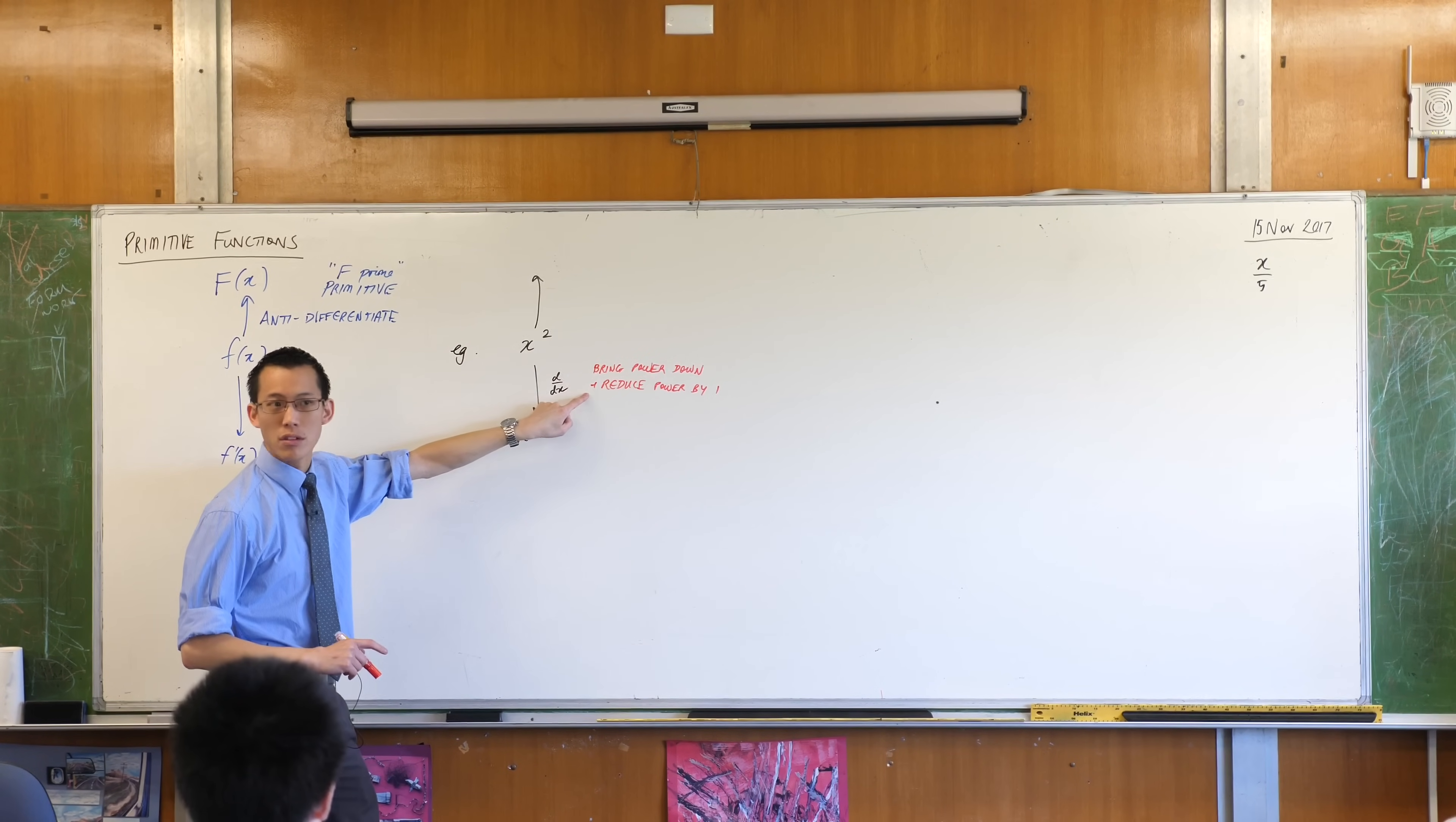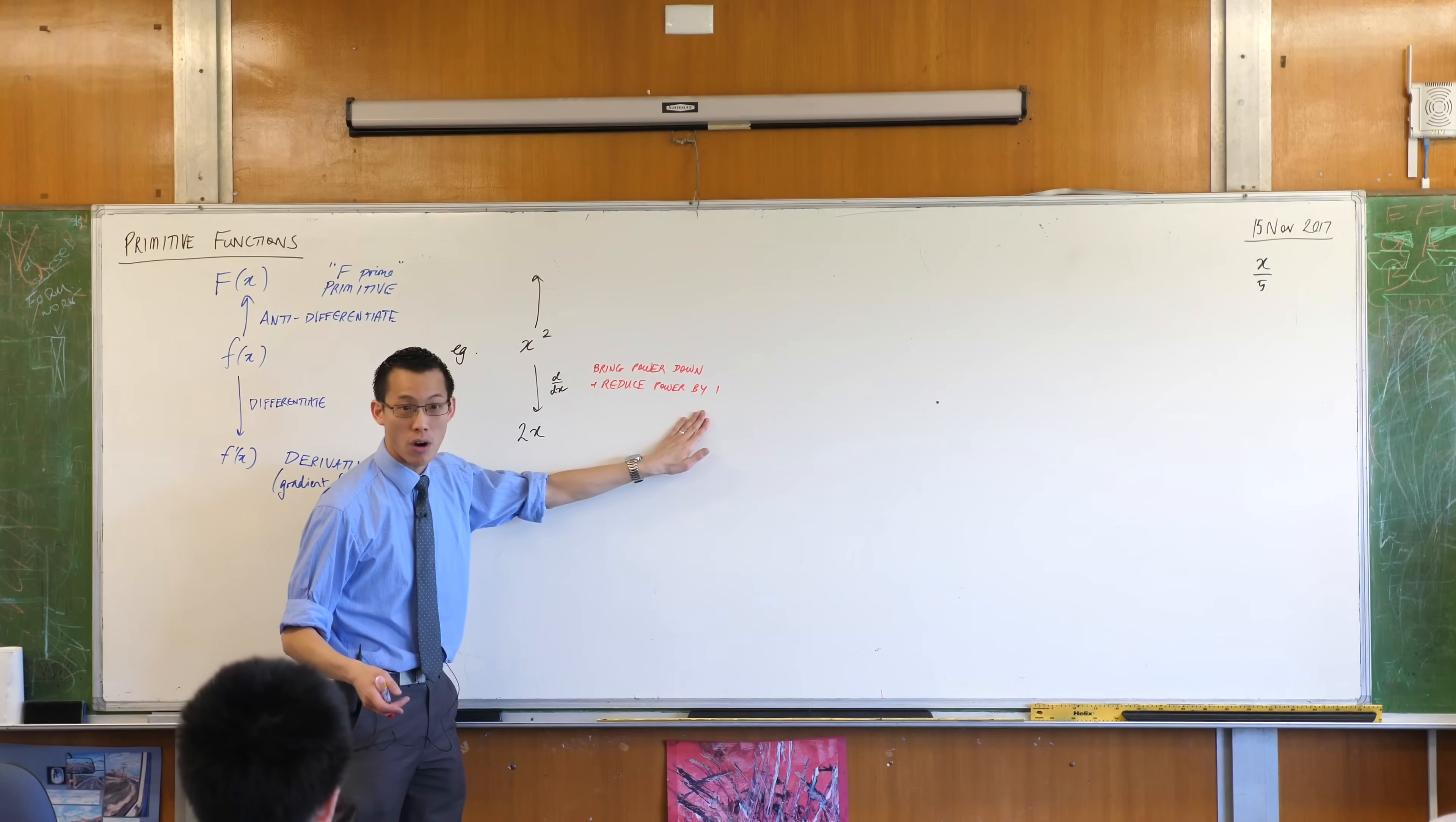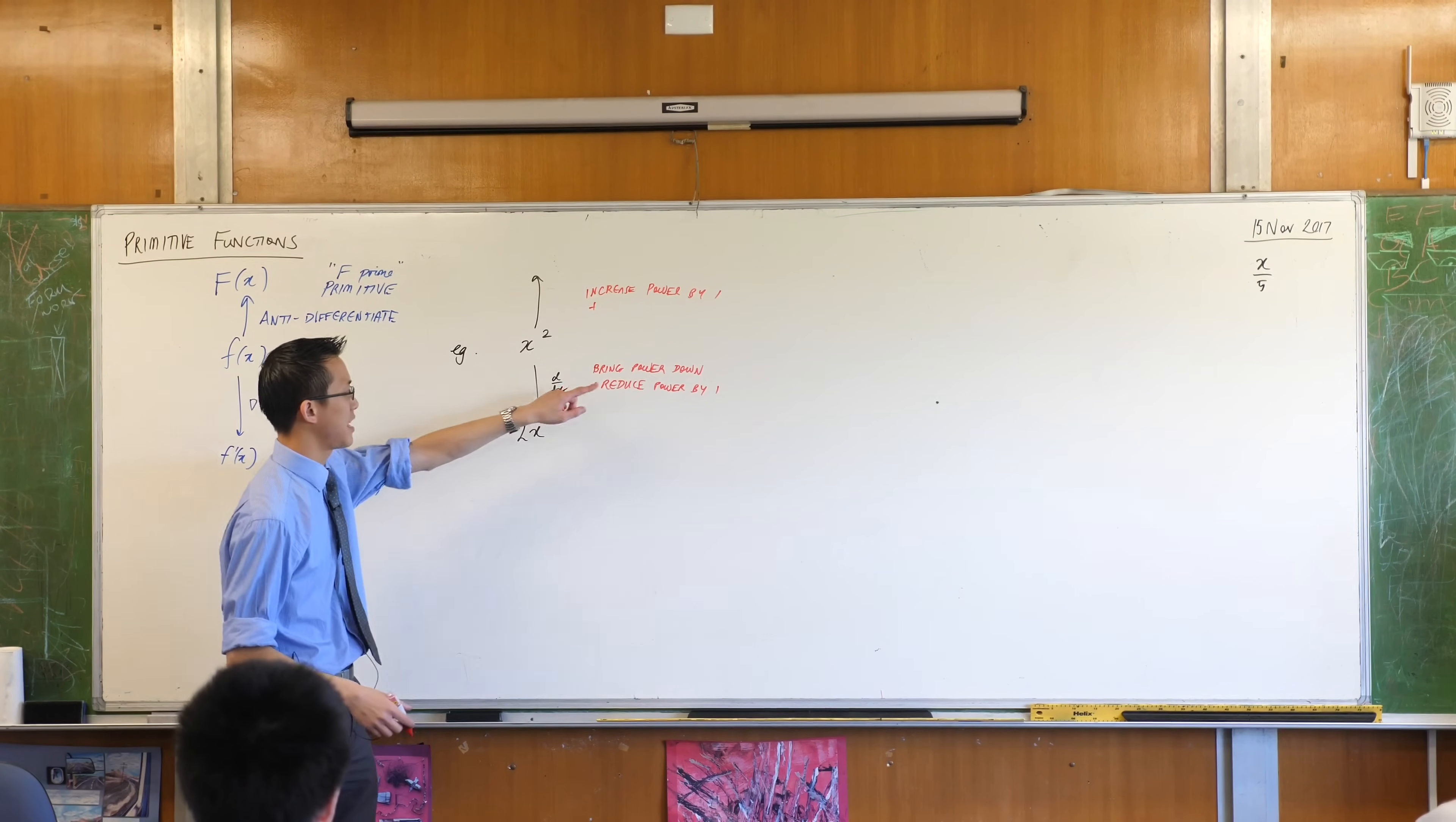When we do this anti-differentiation process, we have to do this exact thing, but everything is backwards. Everything is backwards. There's a step one and step two. Do you notice when we differentiate, you have to do it in this order? You can't reduce the power first and then bring it down because that's not the derivative. I have to do this order differently. I'm going to do this step first, but I'm also going to do it in reverse. So instead of reducing the power, I'm going to increase the power. That's the first thing I do. I'm going to increase power by one.